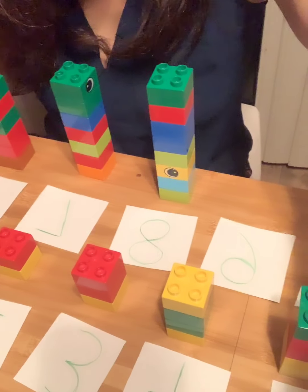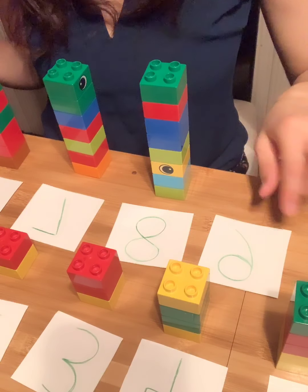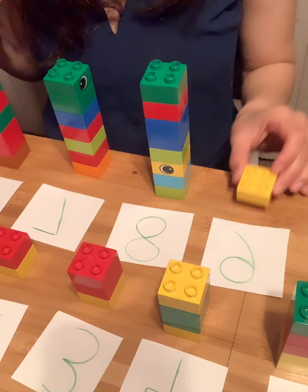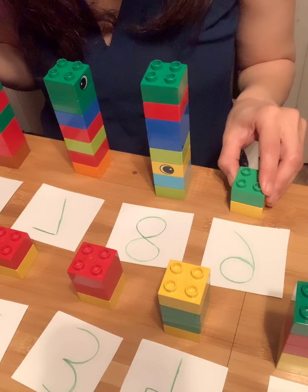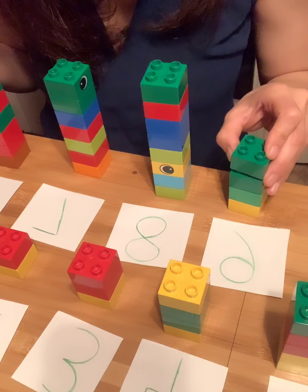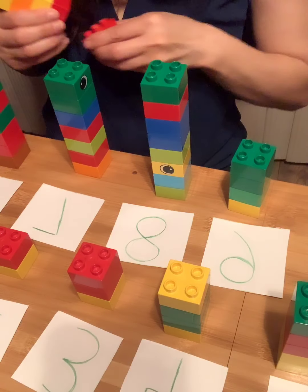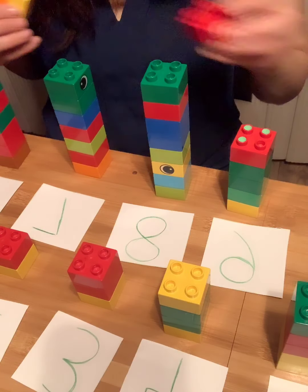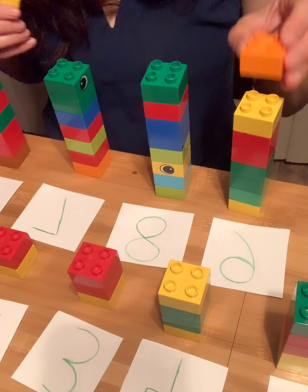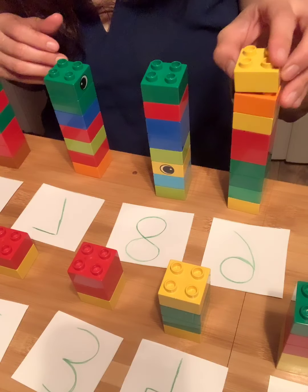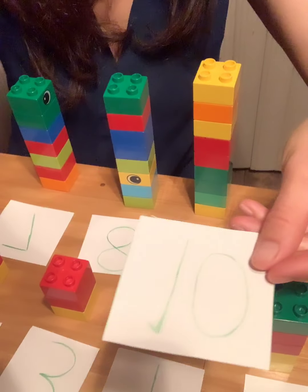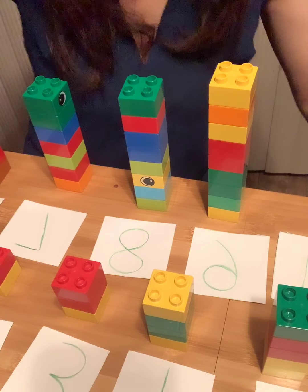And the next one is number nine. That's number nine and I put nine here: one, two, three, four, five, six, seven, eight, nine. The last card is number ten and I need to put ten Legos.